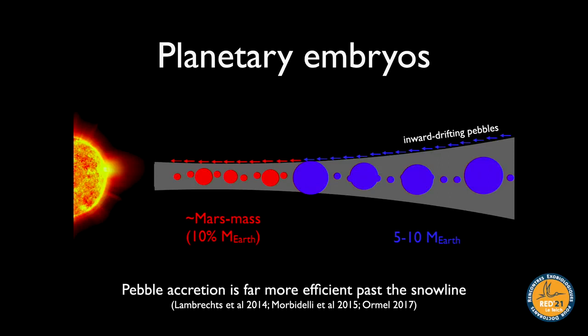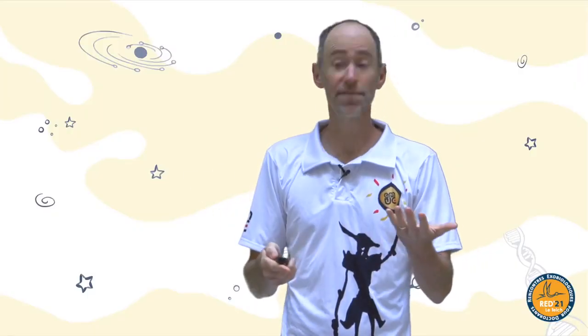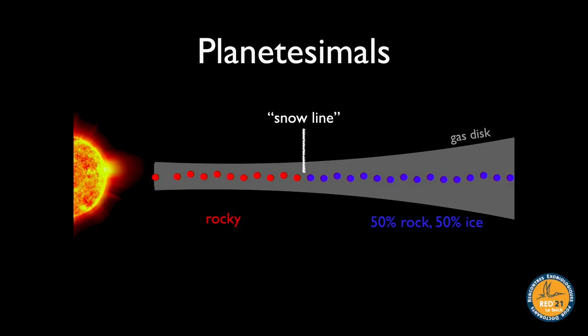This gives a nice cartoon version of the solar system, with small things close to the sun and big things further out — but we're talking about systems that look totally different from the solar system.